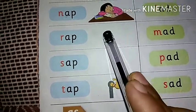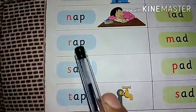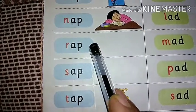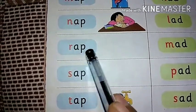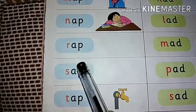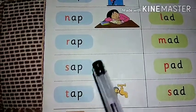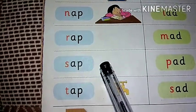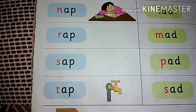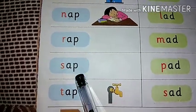यहाँ आप सोच रहे होंगे कि यहाँ कोई भी picture नहीं दिया हुआ, क्योंकि यह rhyming words हैं। सिर्फ बच्चों को यह पढ़ने आना चाहिए — all, call, wall, hall, tall, fall, mall। ऐसे यह rhyming words होते हैं, बच्चों को और ज्यादा बेहतर reading आने के लिए यह कुछ words दिये होते हैं।